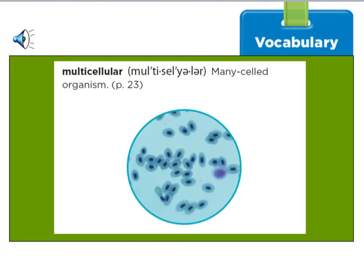Believe it or not, there are one and a half million kinds of organisms that have been identified. And it's estimated that that number is really small compared to the number of unicellular organisms that exist and haven't been identified. Scientists are estimating that there are more than a billion kinds of unicellular organisms.